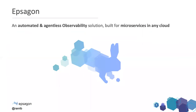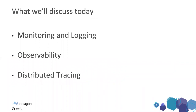Epsilon is doing an automated and agentless observability tool for microservices. If you're interested in learning more, you're welcome to visit the website. Today's session will cover the full flow of observability — how it started with the initial steps of monitoring and logging, and then we'll discuss observability as a concept, including distributed tracing, how it works, and why it matters.